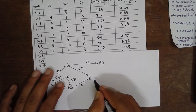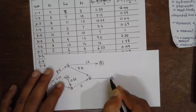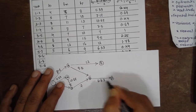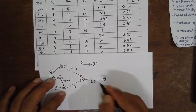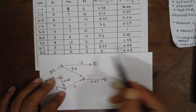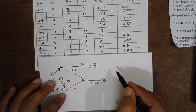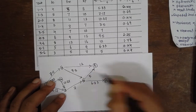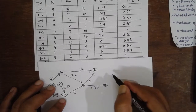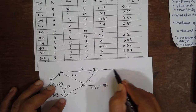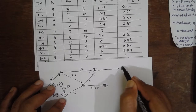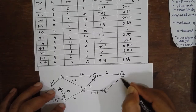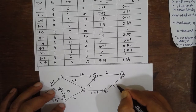Node 5 to 7 with value 6.33. Node 5 to 6 with value 5. Node 6 to 8 with value 9.17.